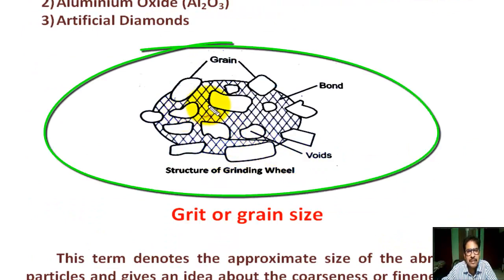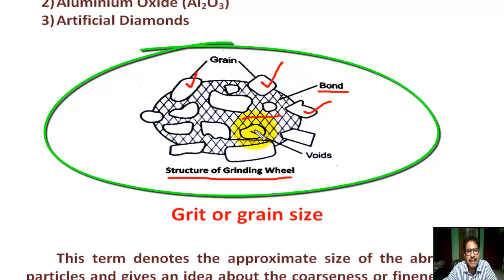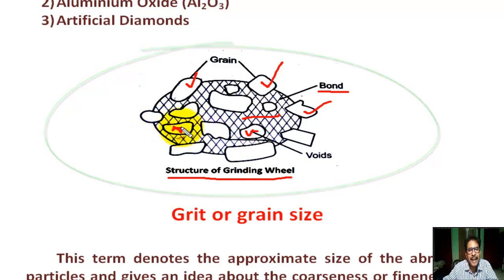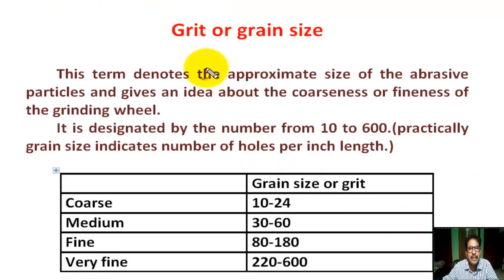This is the structure of a grinding wheel. These are the abrasive grains; all are abrasive grains. These are the bond material which holds the abrasive grains. There are some open spaces - this is called voids.